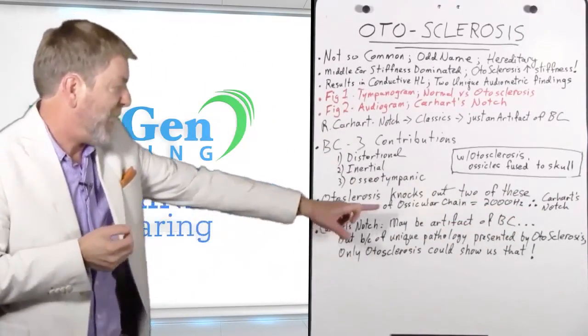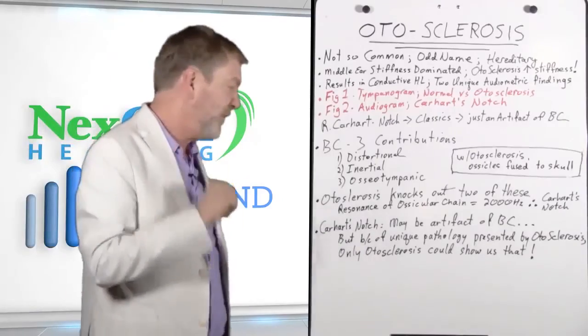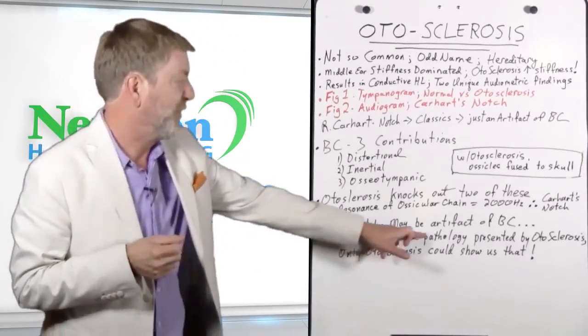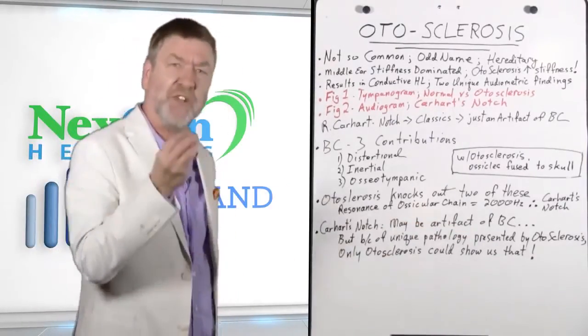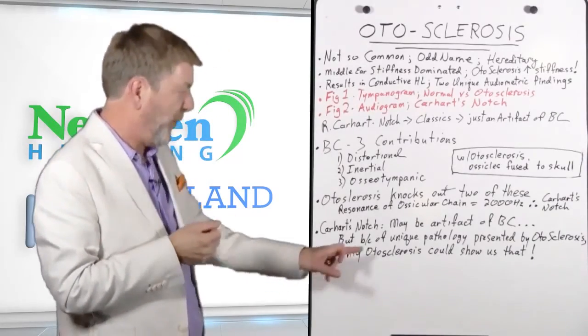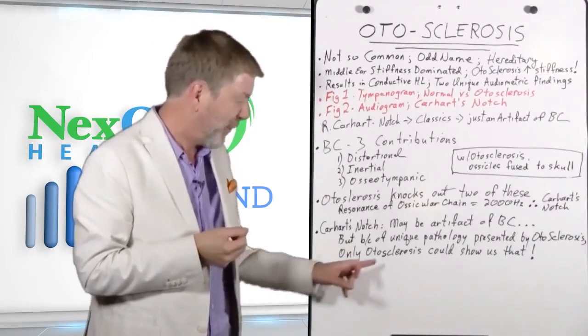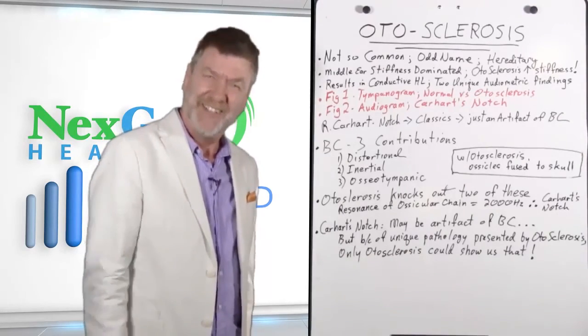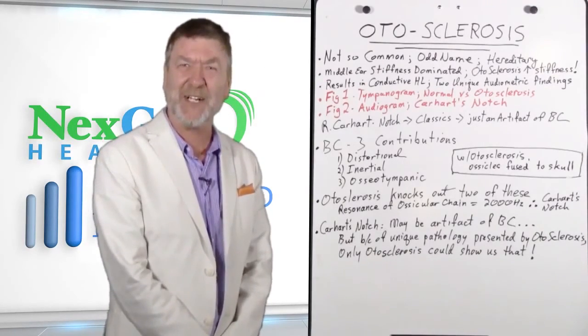Otosclerosis has knocked out two of these contributions, leaving a slight bone conduction hearing loss at 2,000 Hz. But remember, it's an artifact of the way we test bone conduction hearing. It's not an indication of slight hair cell damage inside the cochlea. Carhartt's notch may be an artifact of bone conduction, but because of the unique pathology presented by otosclerosis, only otosclerosis could teach us that. Thanks for listening. See you next time.